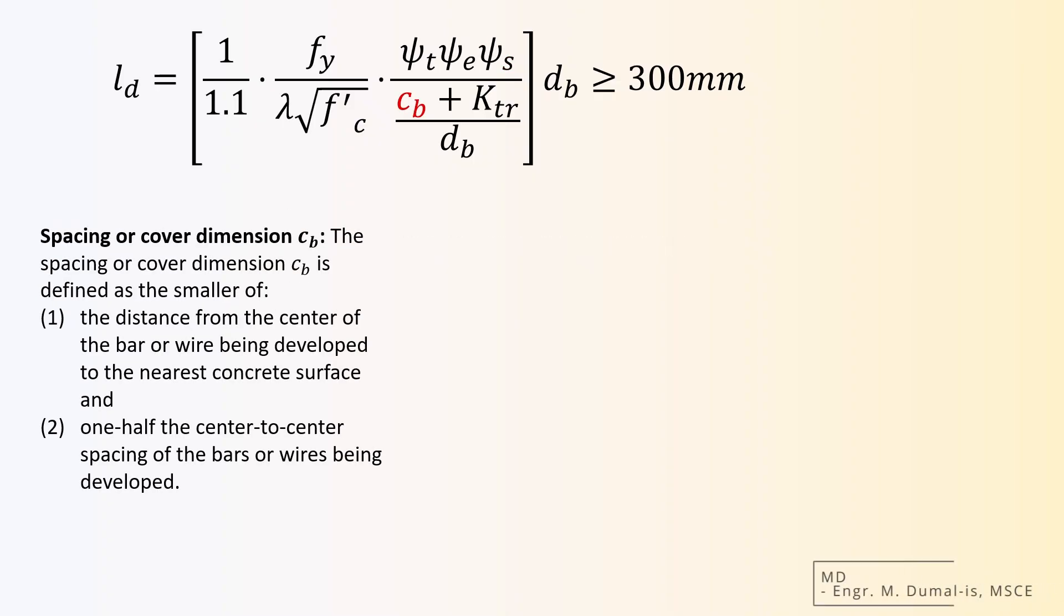For the secondary quantities, such as the spacing or cover dimension, cb, the code defines it as the smaller of the distance from the center of the bar or wire being developed to the nearest concrete surface.